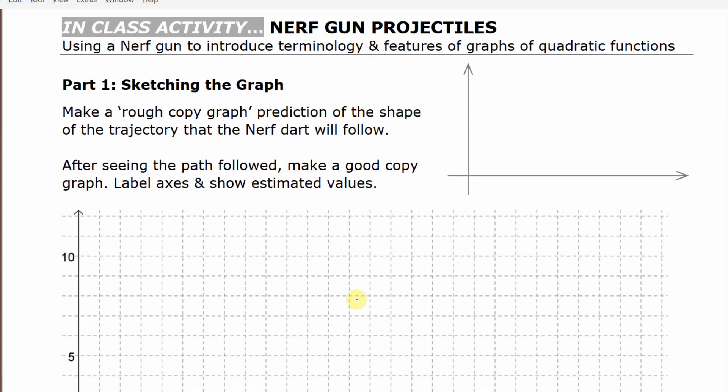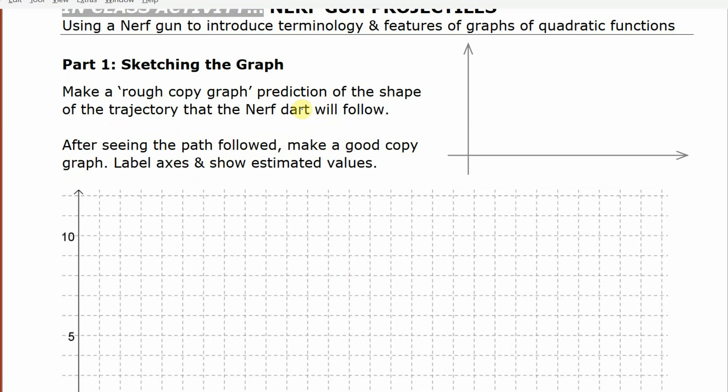If we were in class, what we would do is take a Nerf gun and shoot it upwards in the air. I would hold it about four feet off the ground and we'd shoot it upwards just so that it's below the ceiling, doesn't hit the ceiling or anything. It would go up and then it would come down and hit the ground like that. That shape is one where you have something flying through the air, and that shape is the focus of this unit that we're looking at.